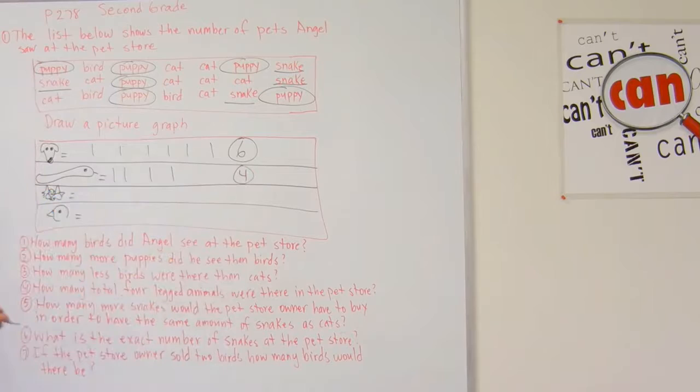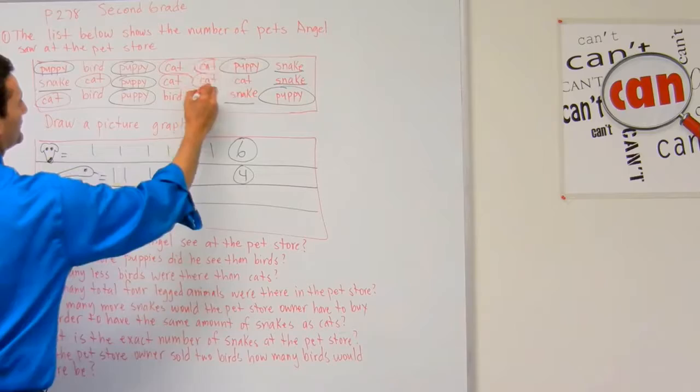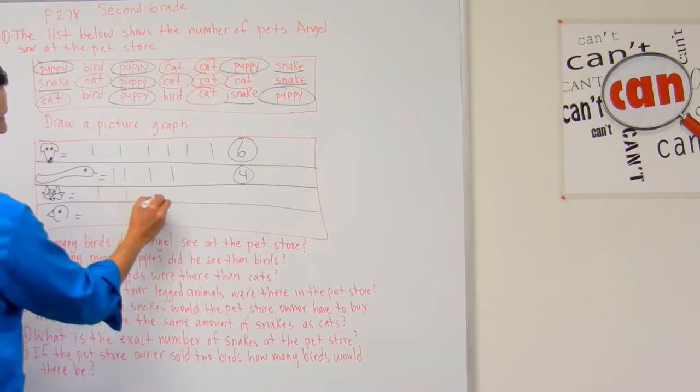Now let's take a look and see how many cats I have. I've got one, two, three, four, five, six, seven, eight — I've got eight cats there.